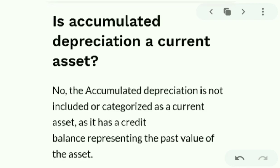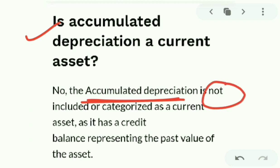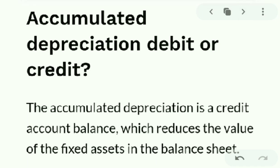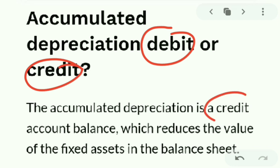Some common questions: Is accumulated depreciation a current asset? No, accumulated depreciation is not a current asset. It has a credit balance representing the past value of the asset. Is accumulated depreciation debited or credited? It is credited, because it reduces the value of fixed assets in the balance sheet.